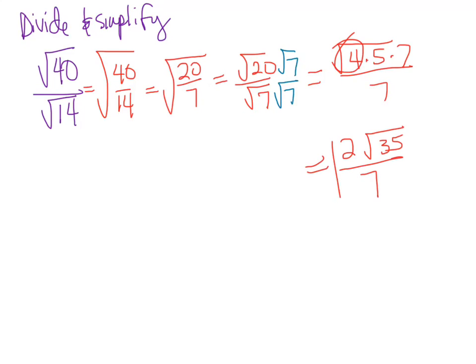So now I can see that my square root of 4 can actually come out to be a 2, because the square root of 4 is 2. And then what's left under the radical is the 5 and the 7, which I need to put back together as 35. So I have 2 square root of 35 over 7.